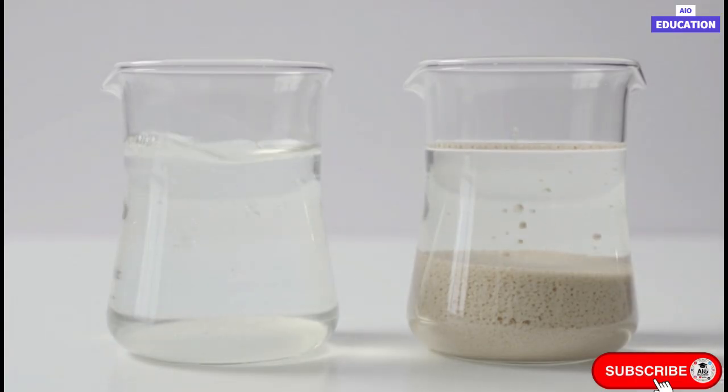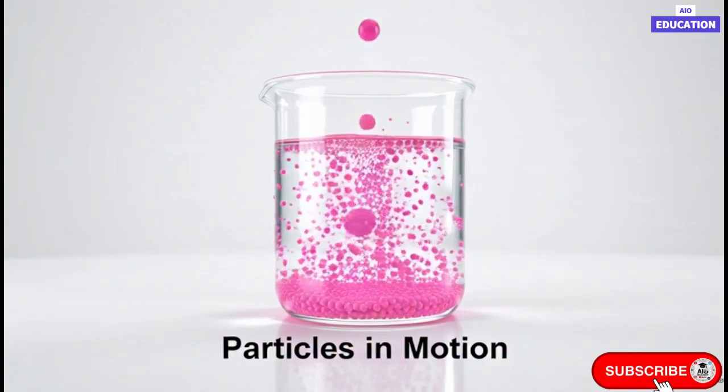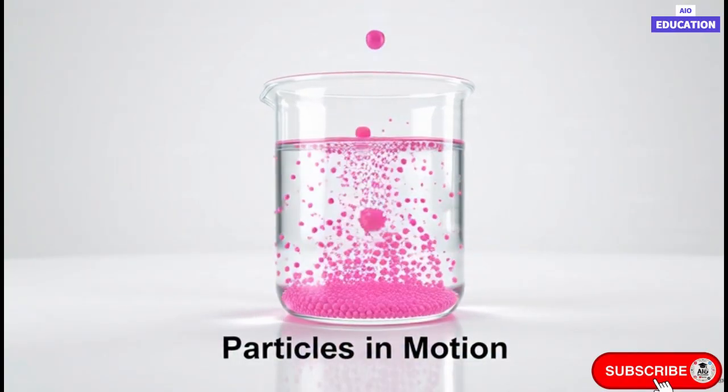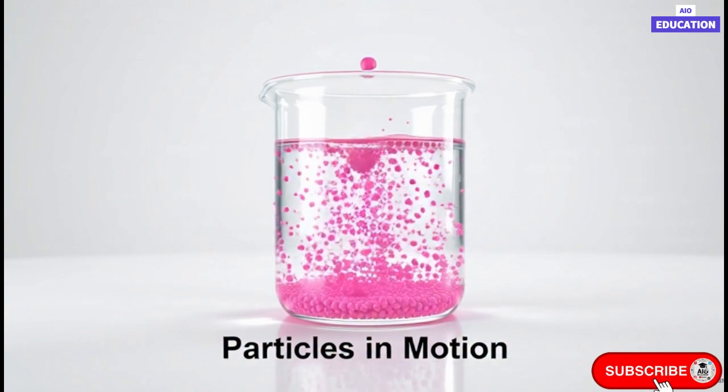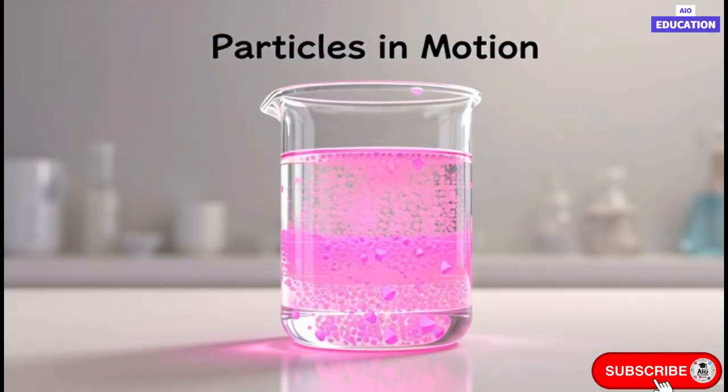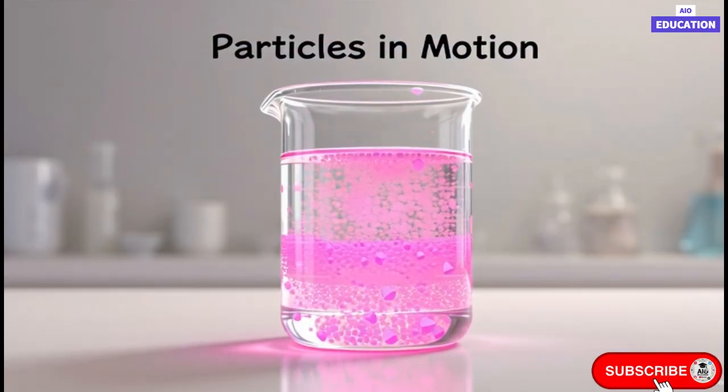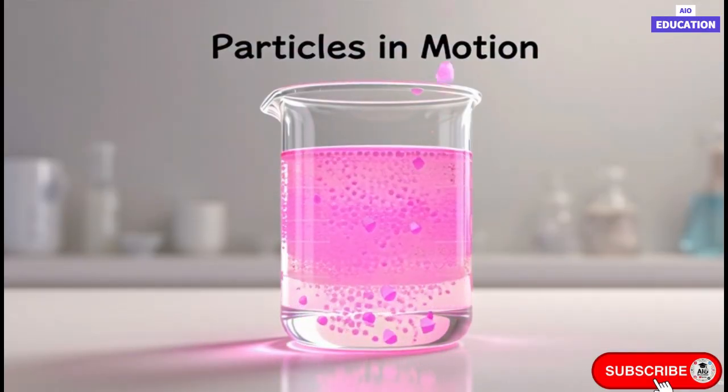The motion of particles can also be observed in the diffusion of colored substances. For example, when we add a few crystals of potassium permanganate to water, initially only the nearby region becomes pink, but after some time, the entire water turns uniformly pink. This shows that the particles of both water and potassium permanganate are constantly moving. If we use hot water, the color spreads even faster because the higher temperature increases the kinetic energy of the particles. This proves that particles of matter are in continuous motion, and their motion increases with the rise in temperature.